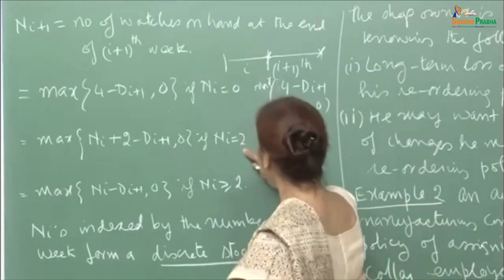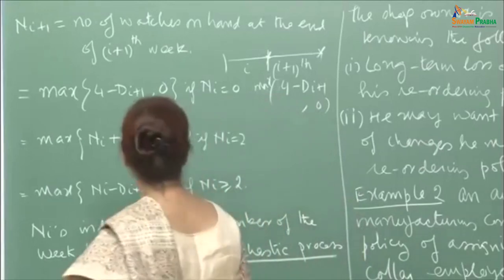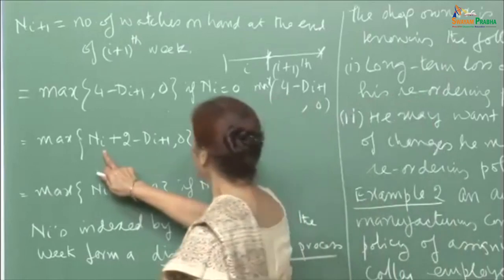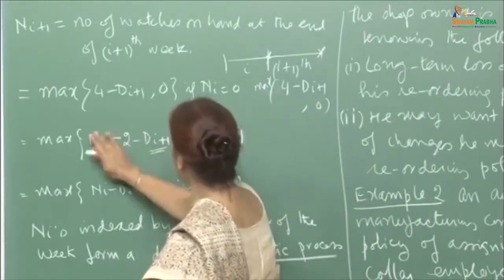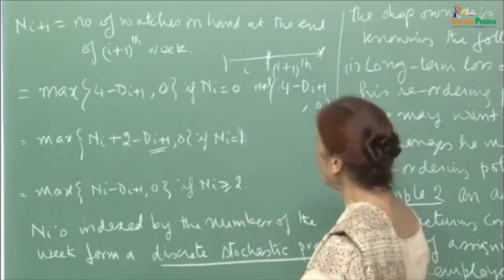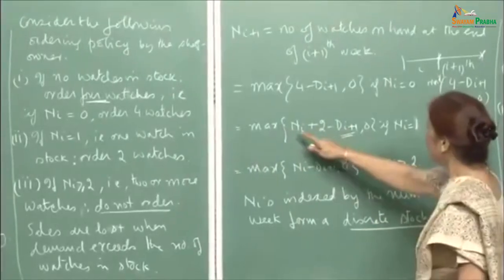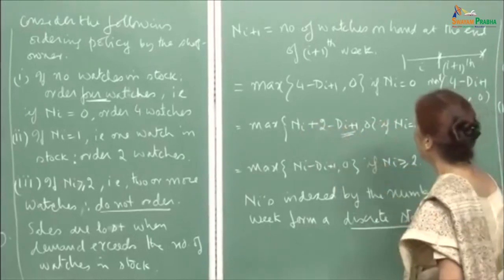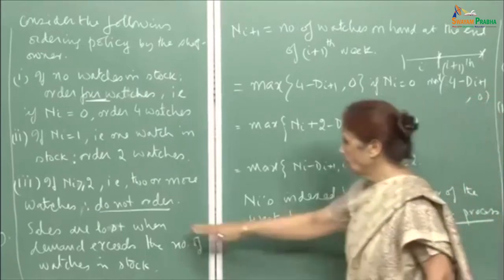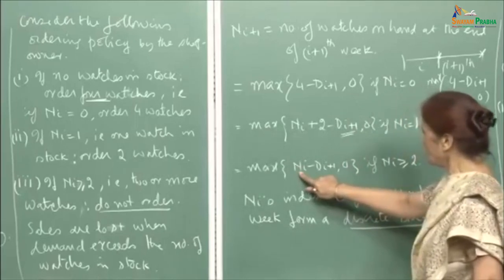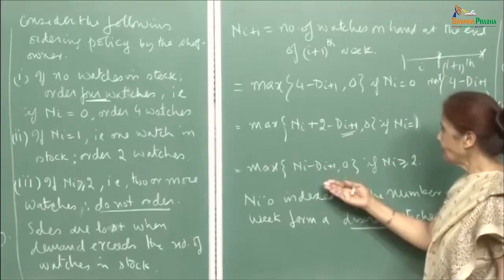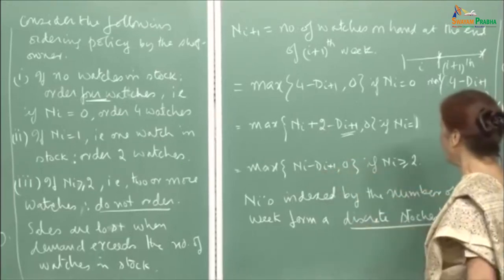Similarly, if n_i is 1, then he orders 2 watches, so n_{i+1} = max(n_i + 2 - d_{i+1}, 0), which is max(3 - d_{i+1}, 0). And if n_i is greater than or equal to 2, then you are not ordering any watches. So the watches at the beginning of the i+1-th week is n_i, and n_i - d_{i+1} is what you are left with at the end. It will again be max of these two values.